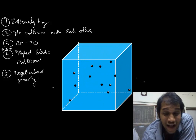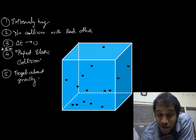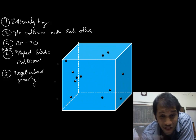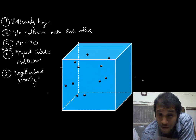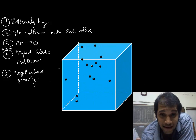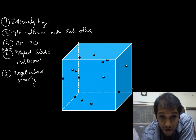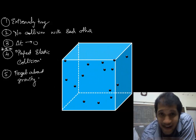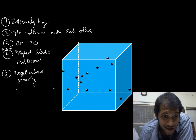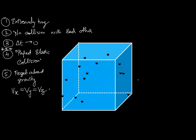When we ignore gravity, something beautiful happens. If there is no gravity, these molecules don't have an up or a down, which means their probability of moving in any direction is exactly the same. So if you consider the x, y, and z axes, on average their velocity along x, along y, and along z has to be exactly the same. It's like tossing a fair coin billions of times — statistically, any direction you consider, the velocity is going to be the same.